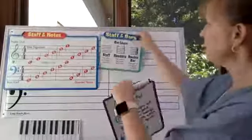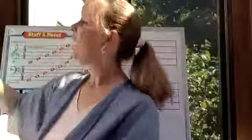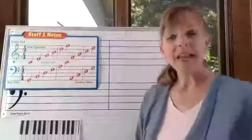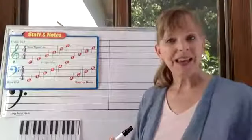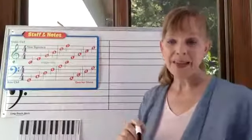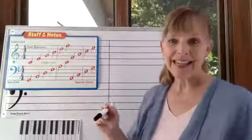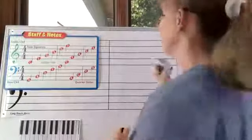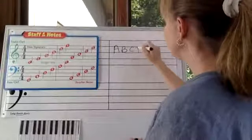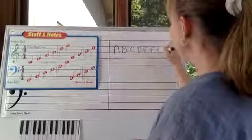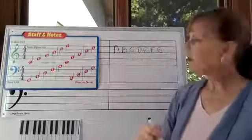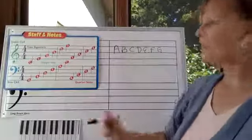Next, we are going to talk about the notes on the staff and what those notes are called. Music notes are labeled A, B, C, D, E, F, and G. So the letters of the alphabet up through G. A, B, C, D, E, F, and G—those are the letters of the notes.